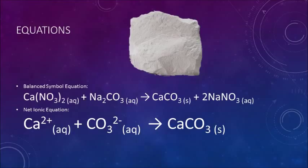The balanced symbol equation shows that one mole of calcium nitrate reacted with one mole of sodium carbonate to yield one mole of calcium carbonate and two moles of sodium nitrate.